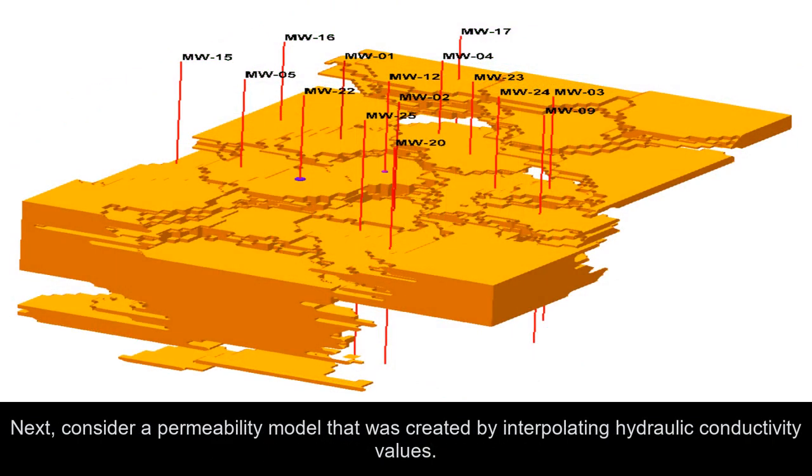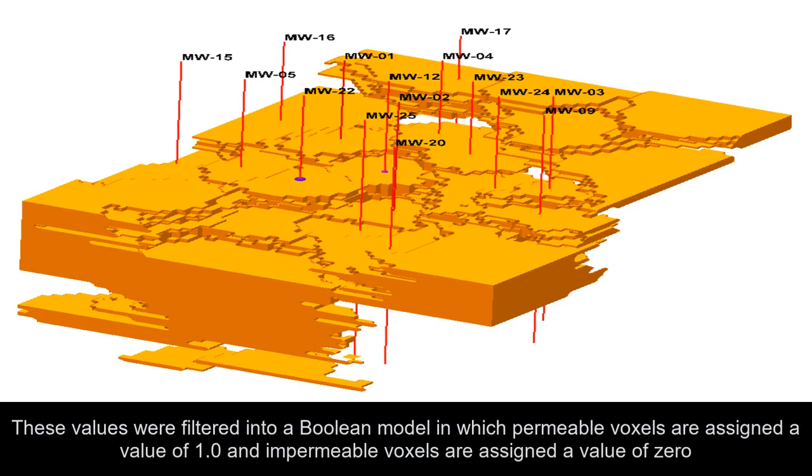Next, consider a permeability model that was created by interpolating hydraulic conductivity values. These values were filtered in a Boolean model in which permeable voxels are assigned a value of one and impermeable voxels are assigned a value of zero.